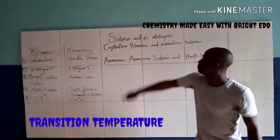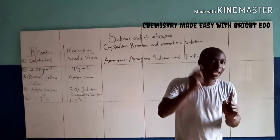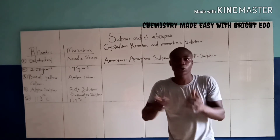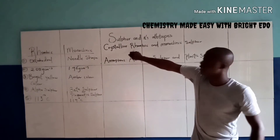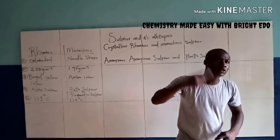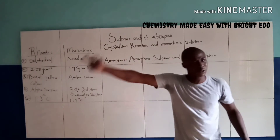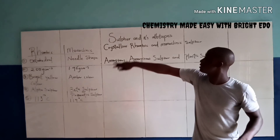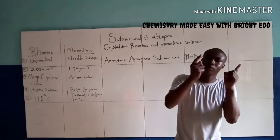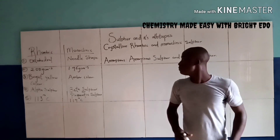Now it should be noted that the type of Allotropy seen in Sulfur is called Enantiotropy, because it has a Transition Temperature that differentiates between either of the Crystalline Allotropes. But for Carbon and Oxygen we have no Transition Temperature, which means they exhibit a special type of Allotropy called Monotropy.